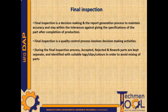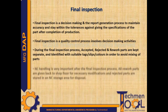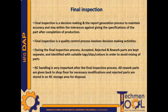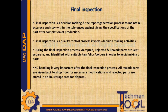During the final inspection process, accepted, rejected, and reworked parts are kept separate and identified with suitable tags, slips, or colors in order to avoid mixing of parts. NC handling is very important after the final inspection process. All reworked parts are given back to the shop floor for the necessary modifications, and rejected parts are stored in an NC storage area for disposal.